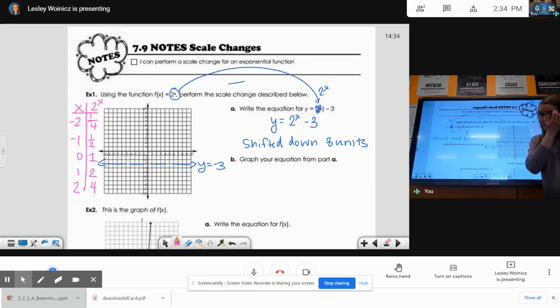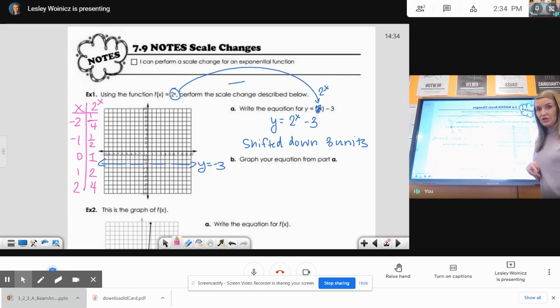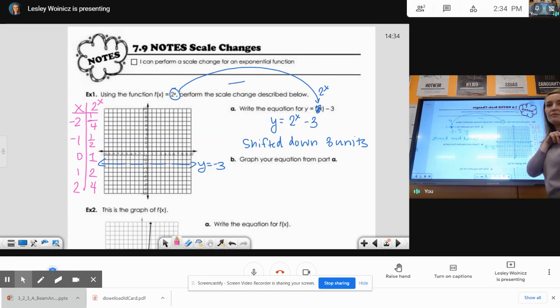If you want more practice with that, you need to look at notes 7.2 on shifts. That will go through how to make that table in depth. So now I'm going to plot these points from my fake origin, because I want the whole parent shifted down 3 units. So I'm doing 0, 1 from my origin, 1, 2 from my fake origin, 2, 4 from my fake origin. So if my parent is just shifted down 3 units, and then it's done.